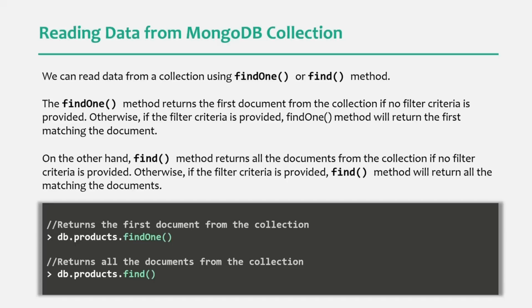When we don't pass a filter object to the find method, it will return all the documents from the collection. But for the findOne method, if we don't pass a filter object, it will return the very first document from the collection.